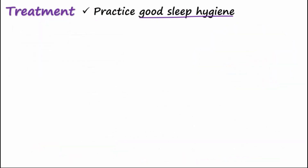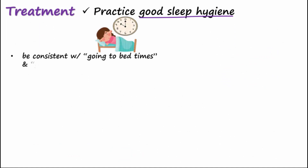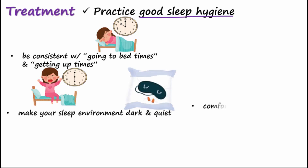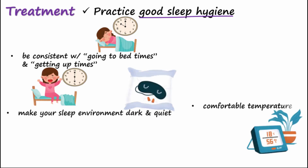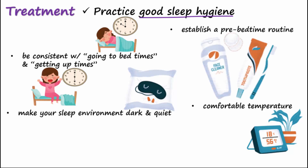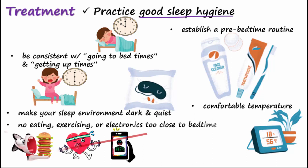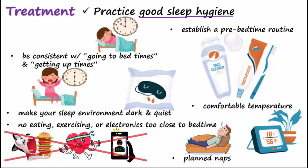Treatment involves practicing good sleep hygiene, which includes going to bed and getting up at the same time each day, making sure your sleep environment is dark and quiet, and ensuring the temperature is comfortable. Establish a consistent pre-bedtime routine, and don't eat, exercise, or use electronics too close to bedtime. Regularly planned daytime naps can help too.